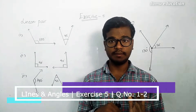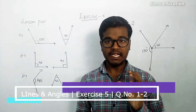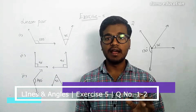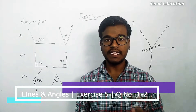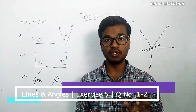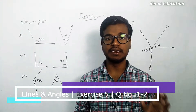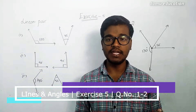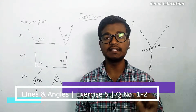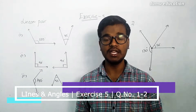What is the difference between supplementary angles and linear pair angles? For linear pair angles, the two angles must always be adjacent to each other. With supplementary angles, any two angles that sum to 180 degrees can be called supplementary.